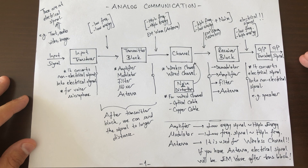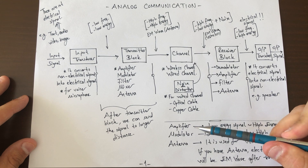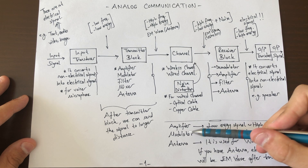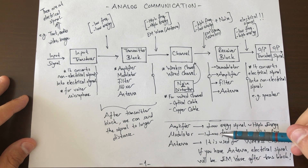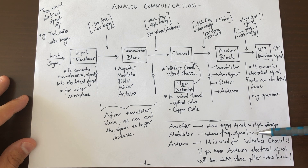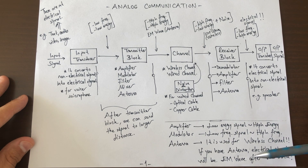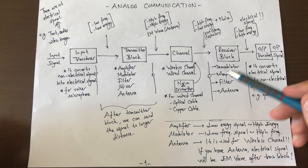The amplifier is used for making the signal strong — it boosts it from low energy to high energy. The modulator converts the signal from low frequency to high frequency. The antenna is used for the wireless channel; it converts the electrical signal into an electromagnetic wave.